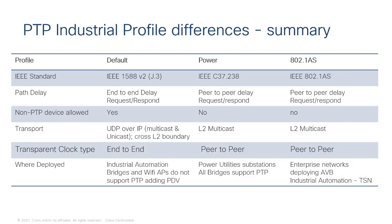There's no one way for PTP protocol to work. Different industries have determined they need PTP to operate slightly differently. There are 12 profiles that we know of, and the three we call industrial are the default, the power, and 802.1 AS — each with their own standard as defined by IEEE. There are some slight differences between them, but the big one that shows up in the messaging is the operation of the transparent clock: there's an end-to-end transparent clock type and a peer-to-peer transparent clock type, and different profiles use different transparent clock types.